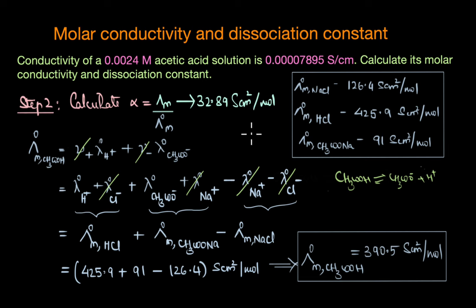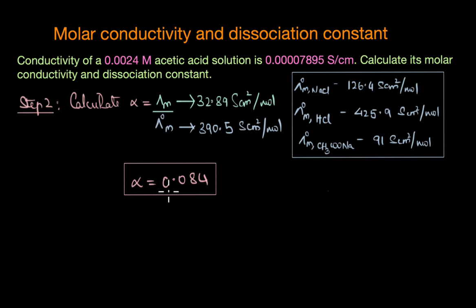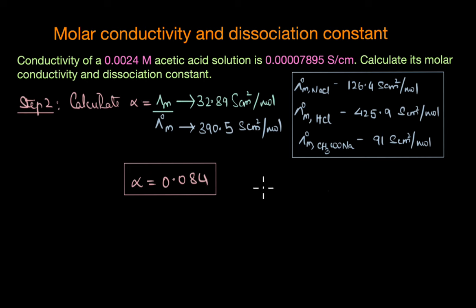We can now substitute this value into the equation for alpha to get the degree of dissociation. We get alpha = 0.084. This value of alpha tells us how much of an electrolyte turns into ions and its ionization behavior in solution. For weak electrolytes like acetic acid, alpha should be much less than 1, which is consistent with the value we obtained here.